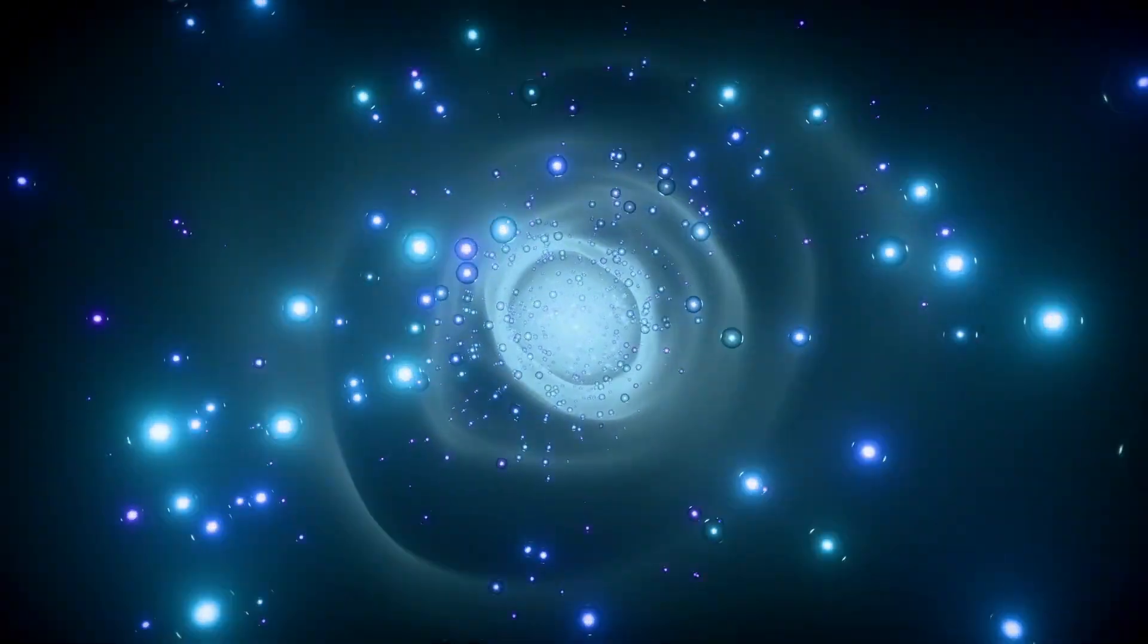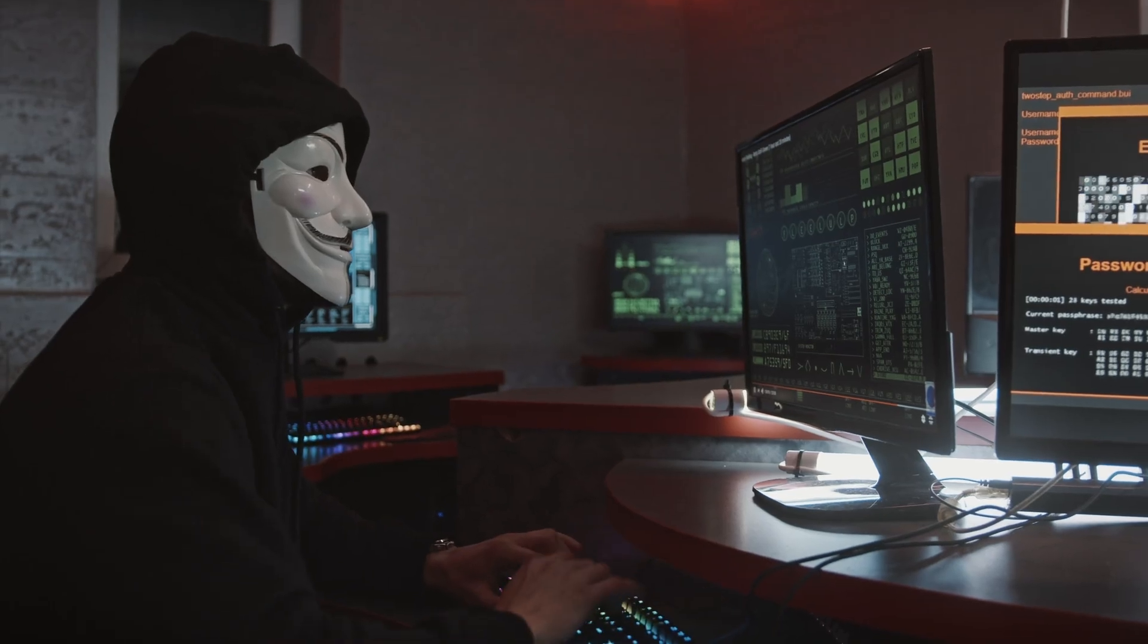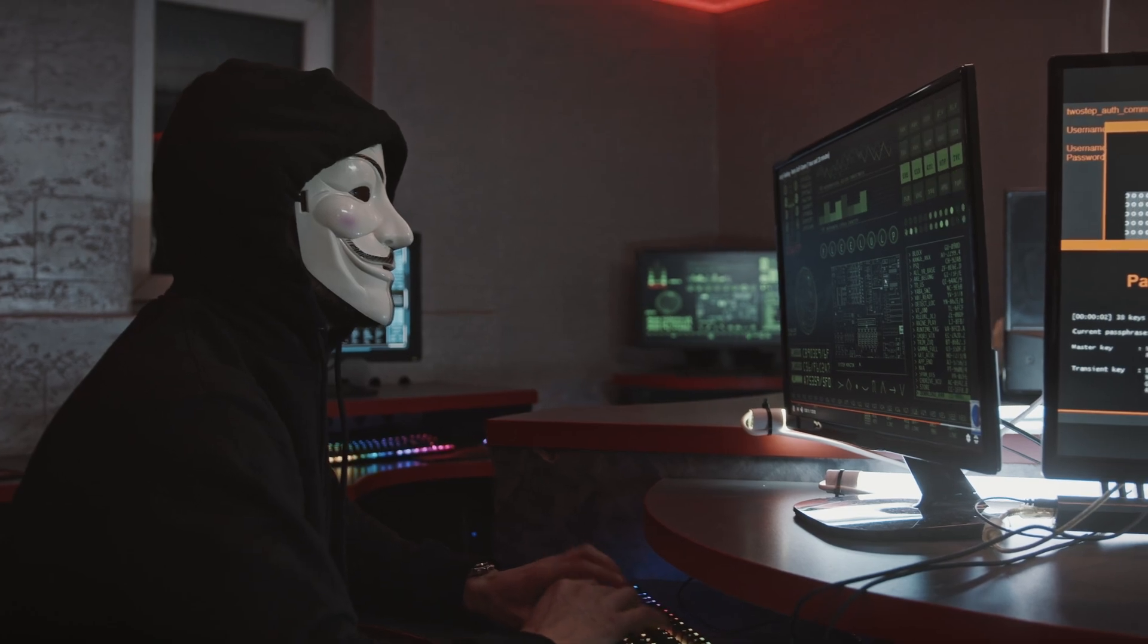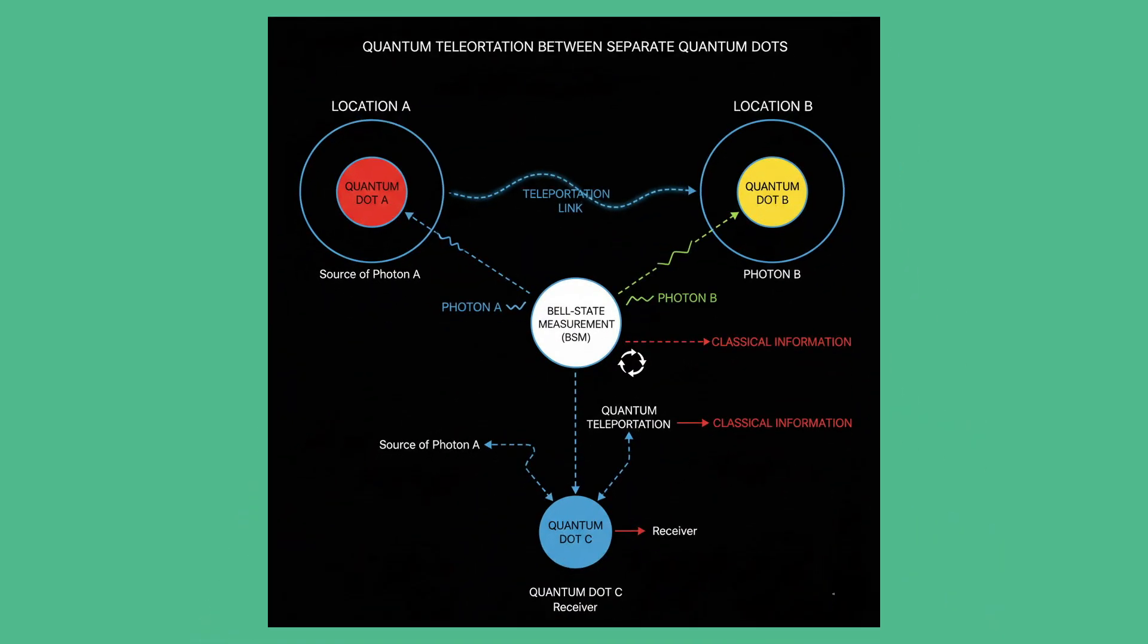Today we're diving into one of the biggest breakthroughs in the race to build a real quantum internet, a network so secure that hackers literally can't break it no matter what tools they have. A team at the University of Stuttgart just did something researchers have been chasing for years. They teleported quantum information between photons that were born in different quantum dots at different locations. This solves one of the hardest technical problems in building long-distance quantum networks.